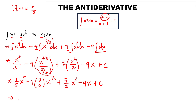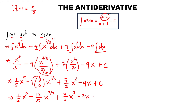Simplifying further: this is 1 over 5 times x to the power 5, then minus — multiply 4 and 3, so 4 times 3 is 12 — then over 5, times x to the power 5 over 3, then plus 7 over 2 times x squared, minus 9x, then plus c. This is now the antiderivative.